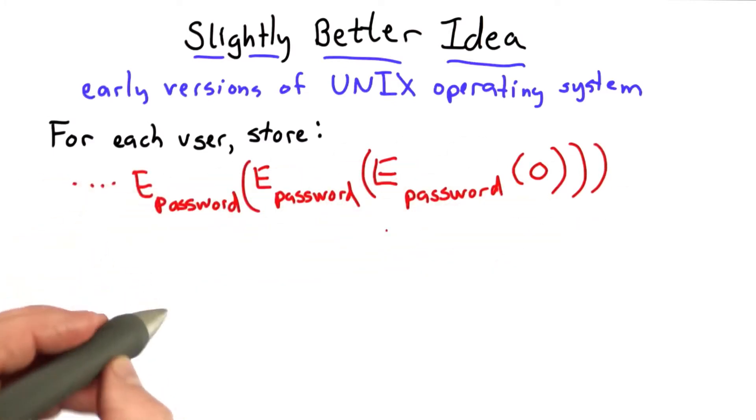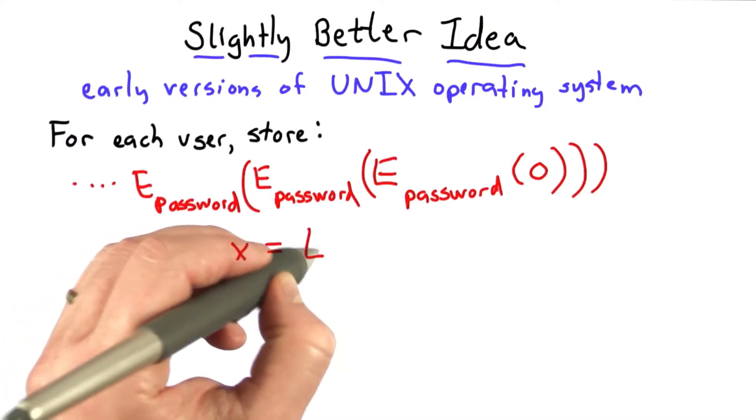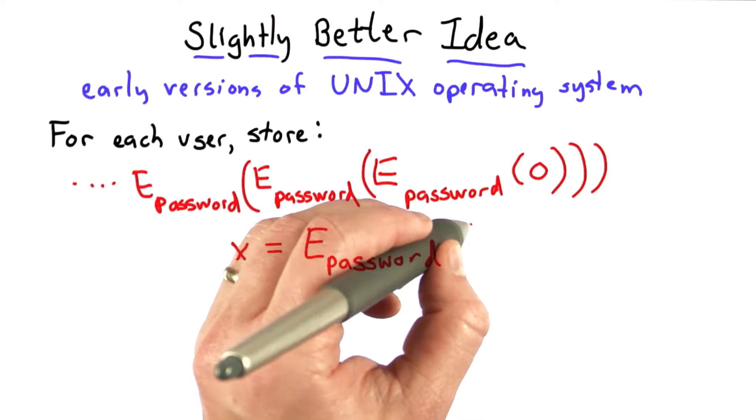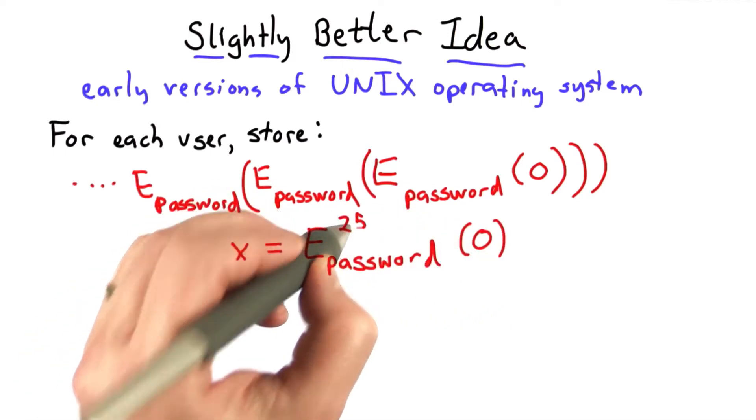And the way this worked in Unix, it was doing this 25 times. So the value that was stored for each user was the result of encrypting using the password as the key, using 0 as the initial value, but looping it around 25 times.